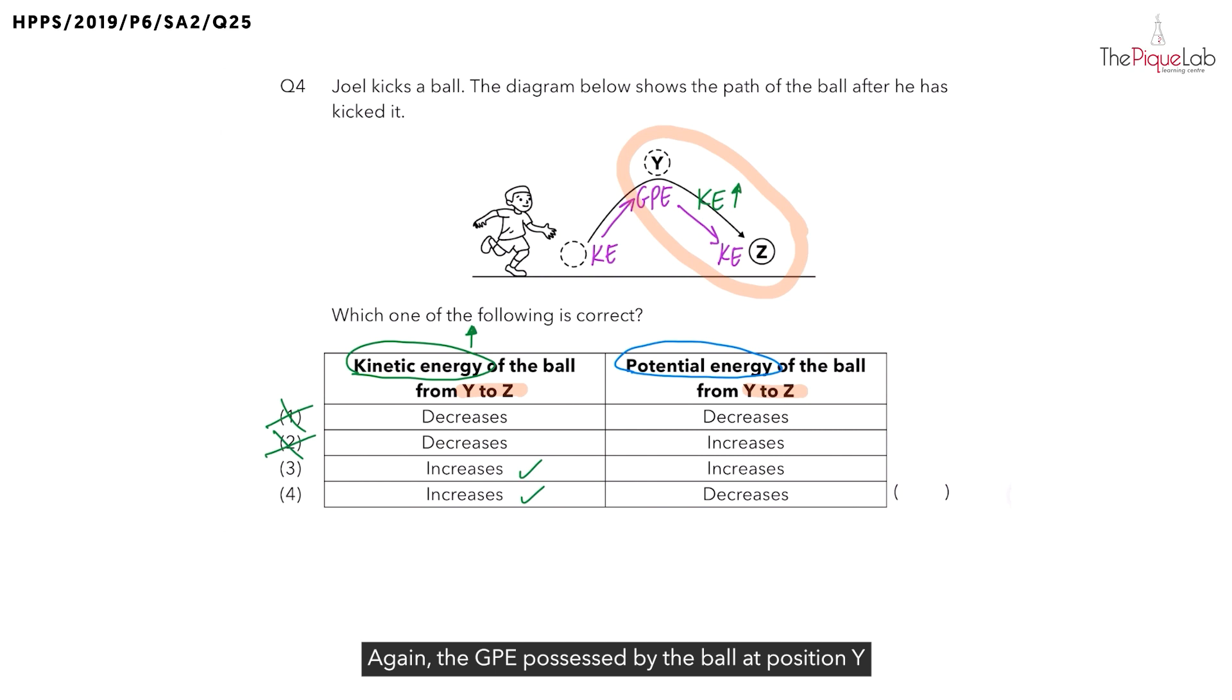Again, the GPE possessed by the ball at position Y is being converted to kinetic energy at position Z. So as the GPE is being converted, what should happen to the amount of GPE? Should it increase or decrease? The GPE should decrease.